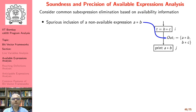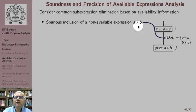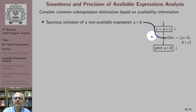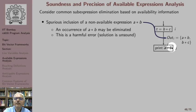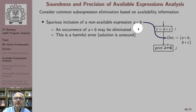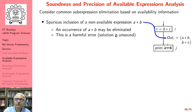We want to talk about spurious inclusion of a non-available expression a*b. In this control flow graph, we have expression b*c being available, but assume that apart from b*c we also say a*b is available. This is spurious — this is erroneous — and we want to see what impact this error could have. When we mark an expression available when it actually is not, an occurrence of a*b may be eliminated as redundant. This is a harmful error and the solution is unsound.